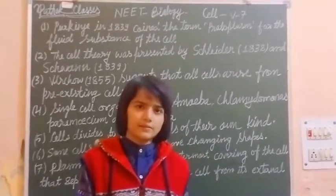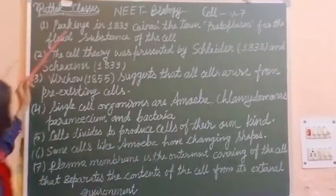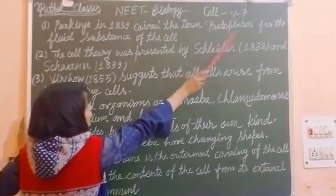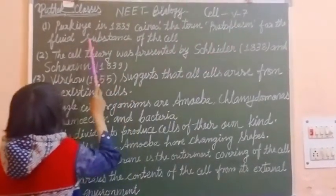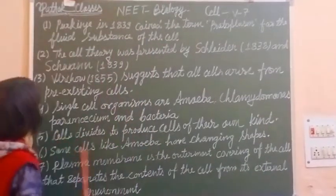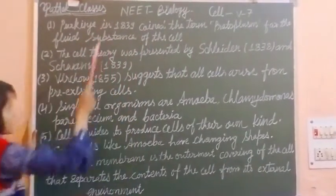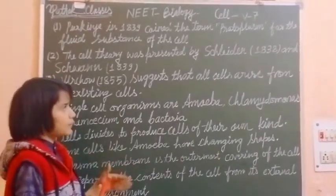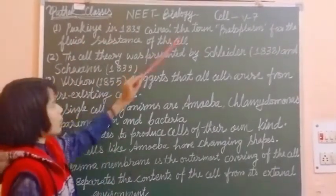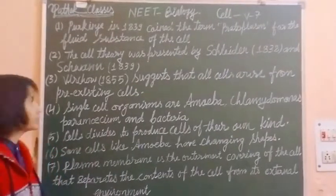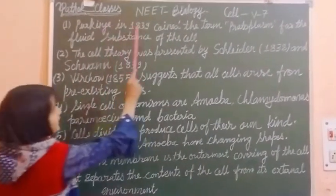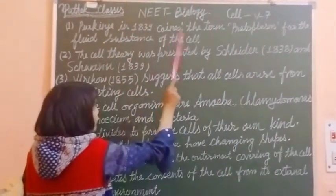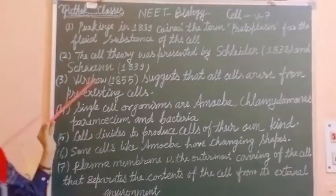So let's start with point number 1. Purkenji in 1839 coined the term protoplasm for the fluid substance of the cell. I hope you get this point number 1.